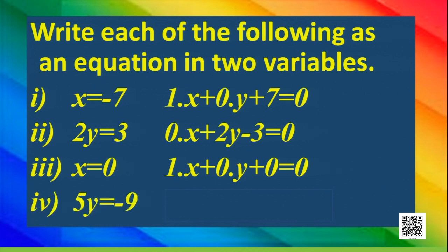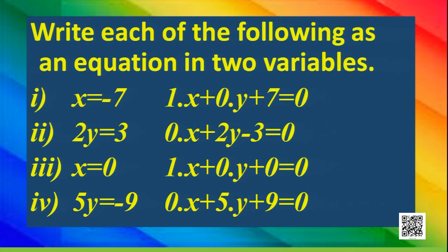Next comes 5y minus 9. Here again x is absent, so its coefficient must be 0. So we can write this as 0 times x plus 5 times y plus 9 equal to 0, where a is 0, b is 5 and c is 9.